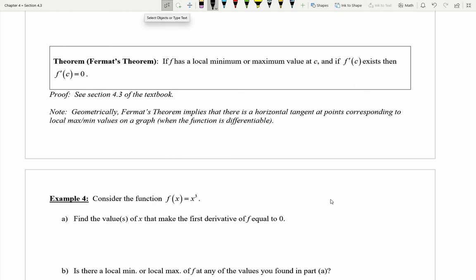In the last video we took a look at this interesting idea of Fermat's theorem that said if we ever came across a function that had a local min or maximum somewhere, and if the derivative existed at that point, the derivative would have to be equal to zero.